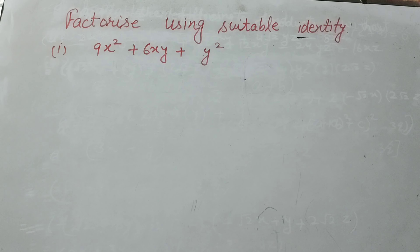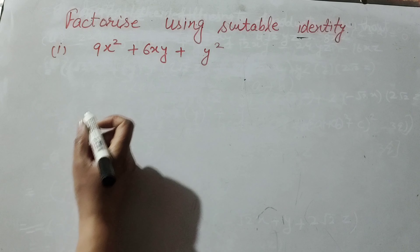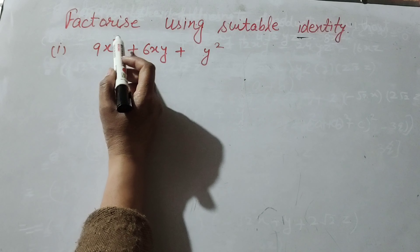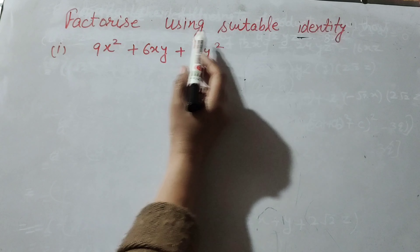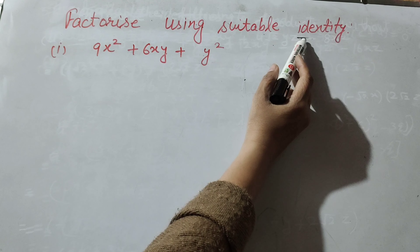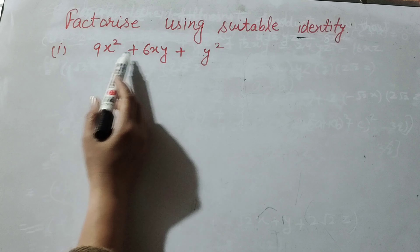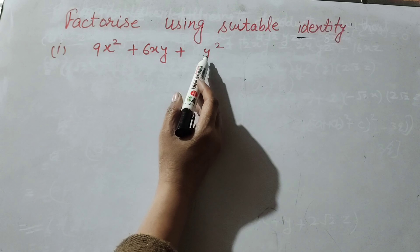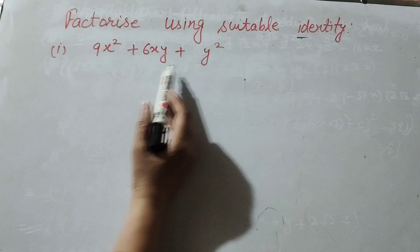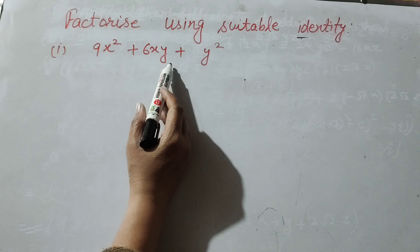Hello friends, welcome to my channel. In this video we discuss the question: factorize using suitable identity. In the first part it is 9x squared plus 6xy plus y squared.